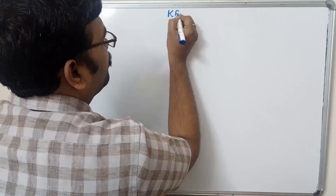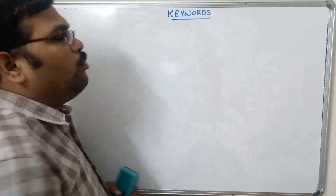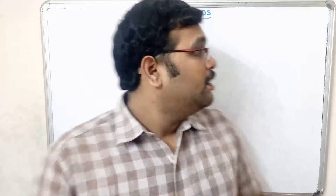Hello friends, welcome back to our channel. In today's session let's have a look at the different keywords available in Java programming. A keyword is a predefined word given by the compiler which has a specific task. There are different keywords we are going to use in Java programming and all those keywords will have their own specific meaning.